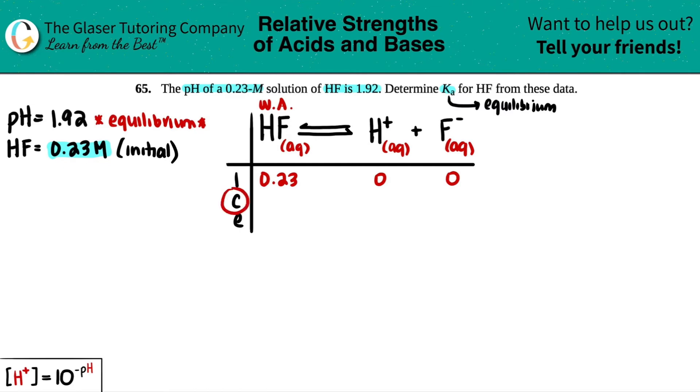Now let's run through the ICE table. So this was initial of HF, 0.23. I stands for initial, and it's already in molarity. They didn't state how much H plus I had initially, and they didn't state how much F minus I had initially. They only told us the pH. But a good thing to know is that pH comes from equilibrium. So I have zero and I have zero.